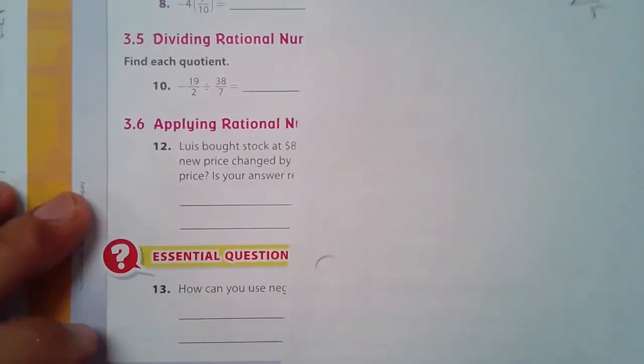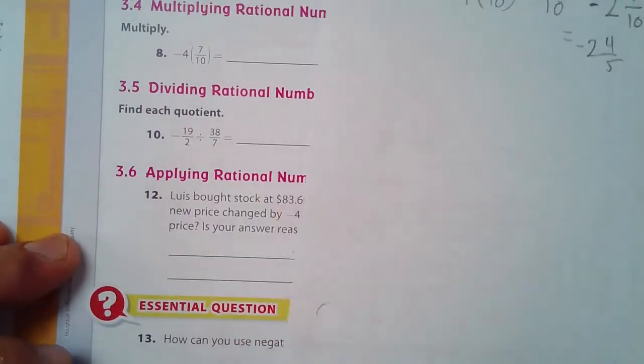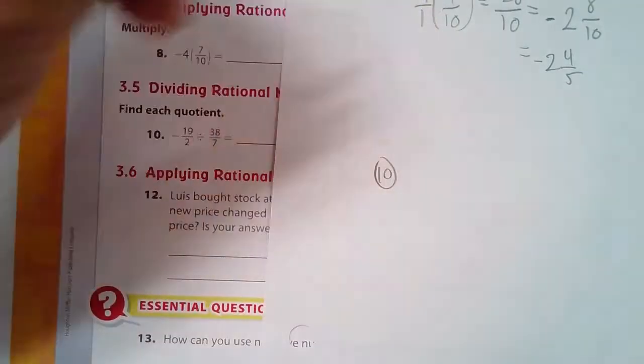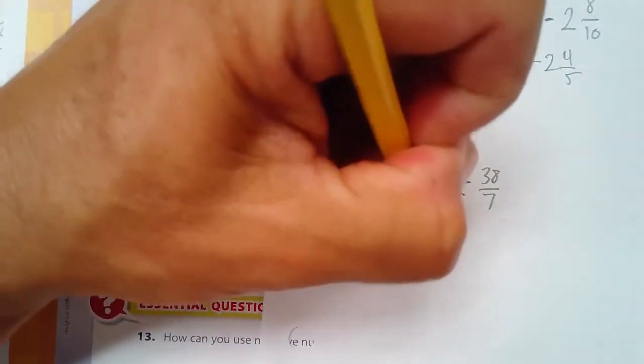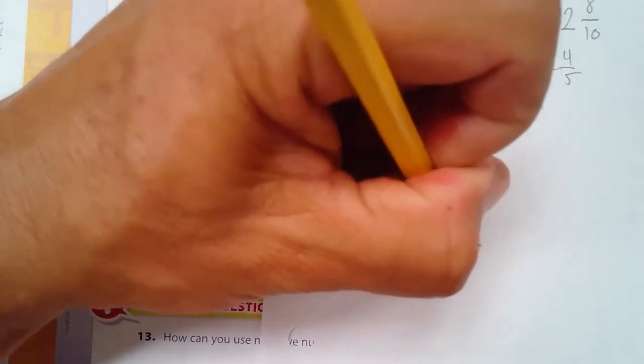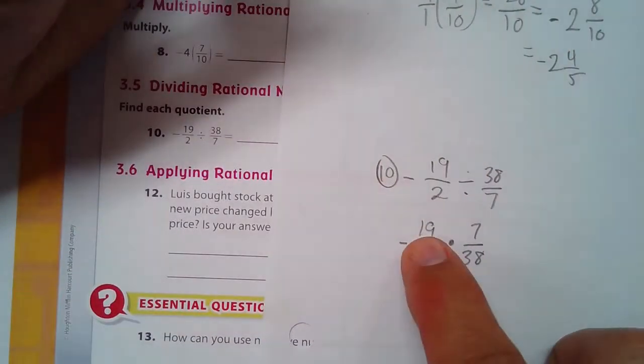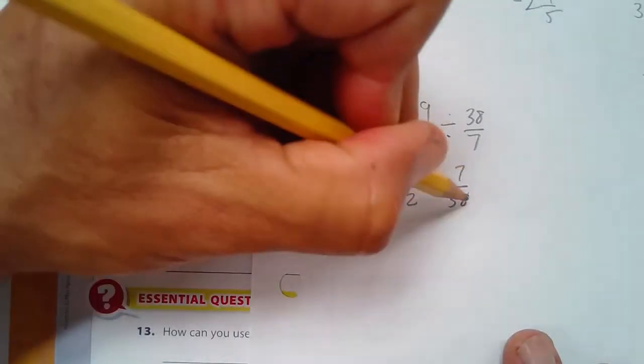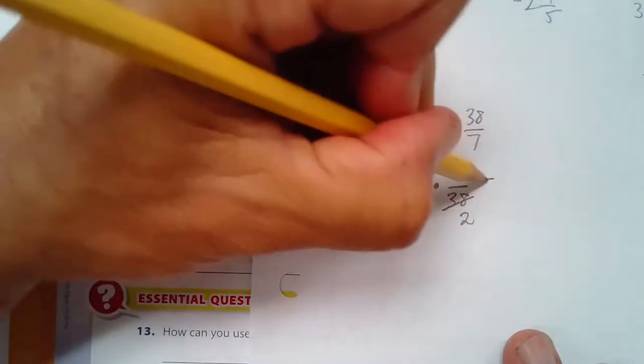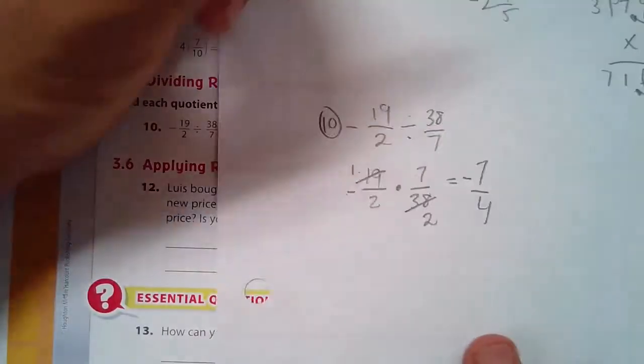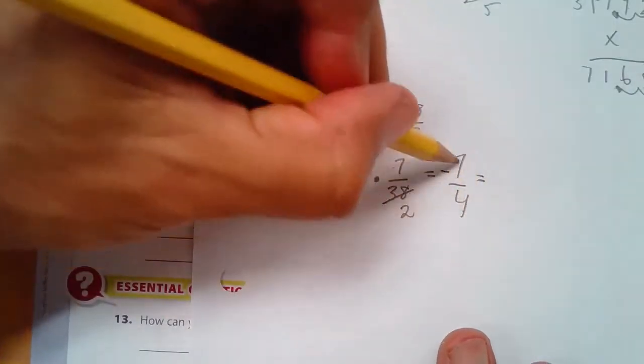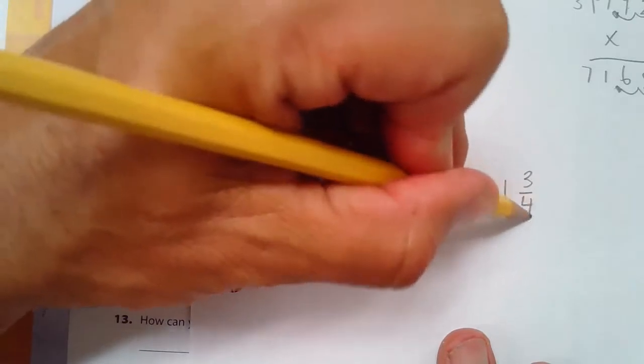Number 10 is 19 over 2, with a negative, divided by 38 over 7. 19 over 2, negative, times 7 over 38. I know that 19 times 2 is 38, so I can cross-cancel. 1 times 7 is 7, 2 times 2 is 4, negative times positive is negative. And then 4 goes into 7, one time with 3 left over, and it's negative. 1 and 3/4.